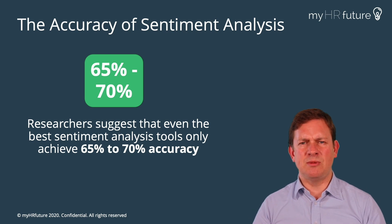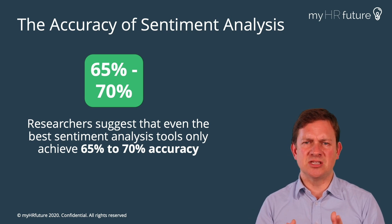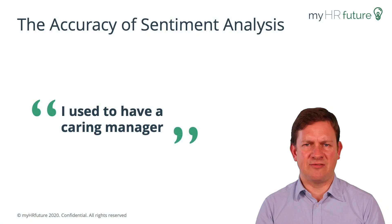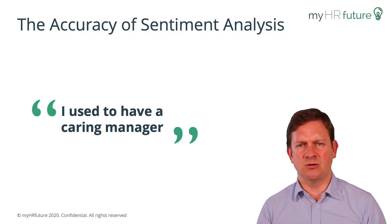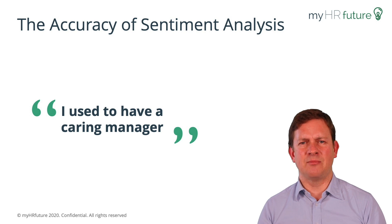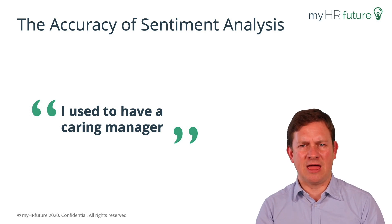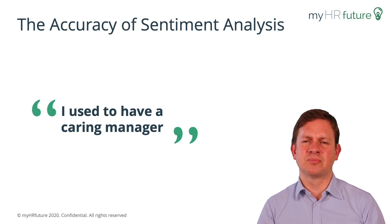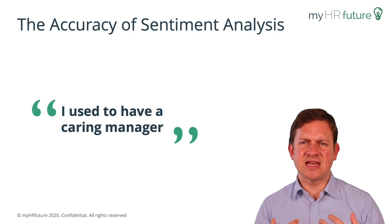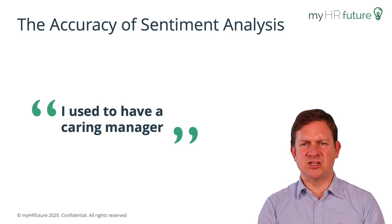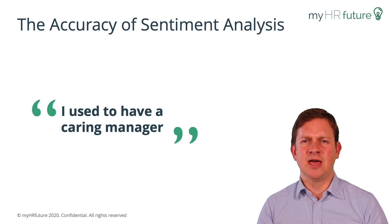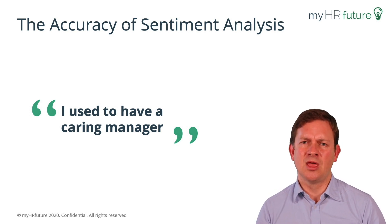The type of sentence that we might see a lot in a survey is something like: 'I used to have a caring manager.' The person who's written that almost certainly is saying it because they no longer have a caring manager. Whereas the text sentiment tool would look at the word 'caring' next to 'manager' and classify it as positive, where actually the human interpretation is negative.